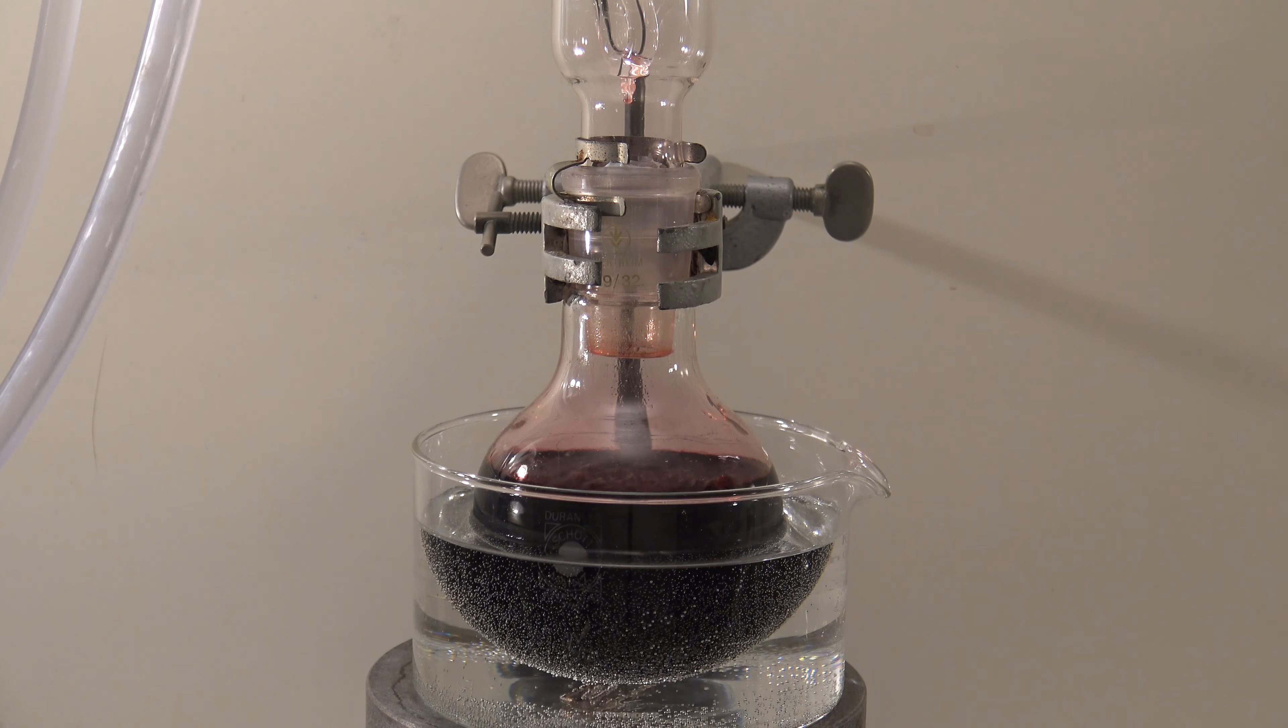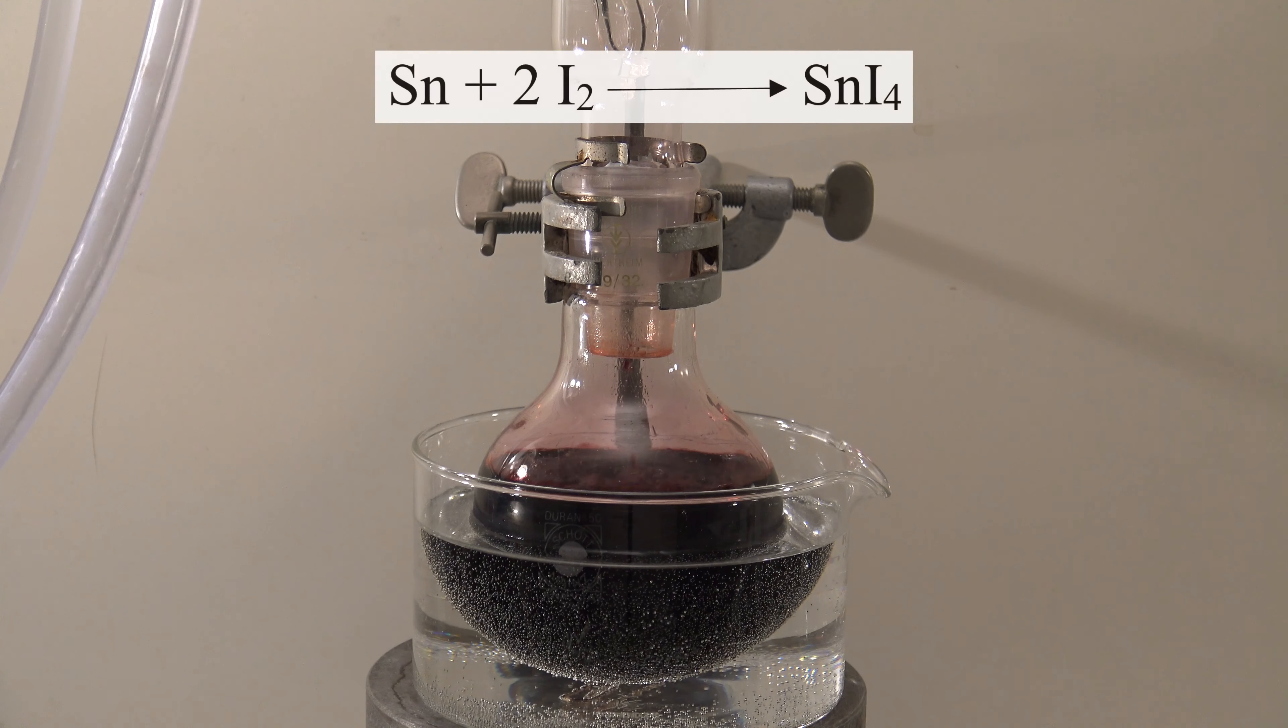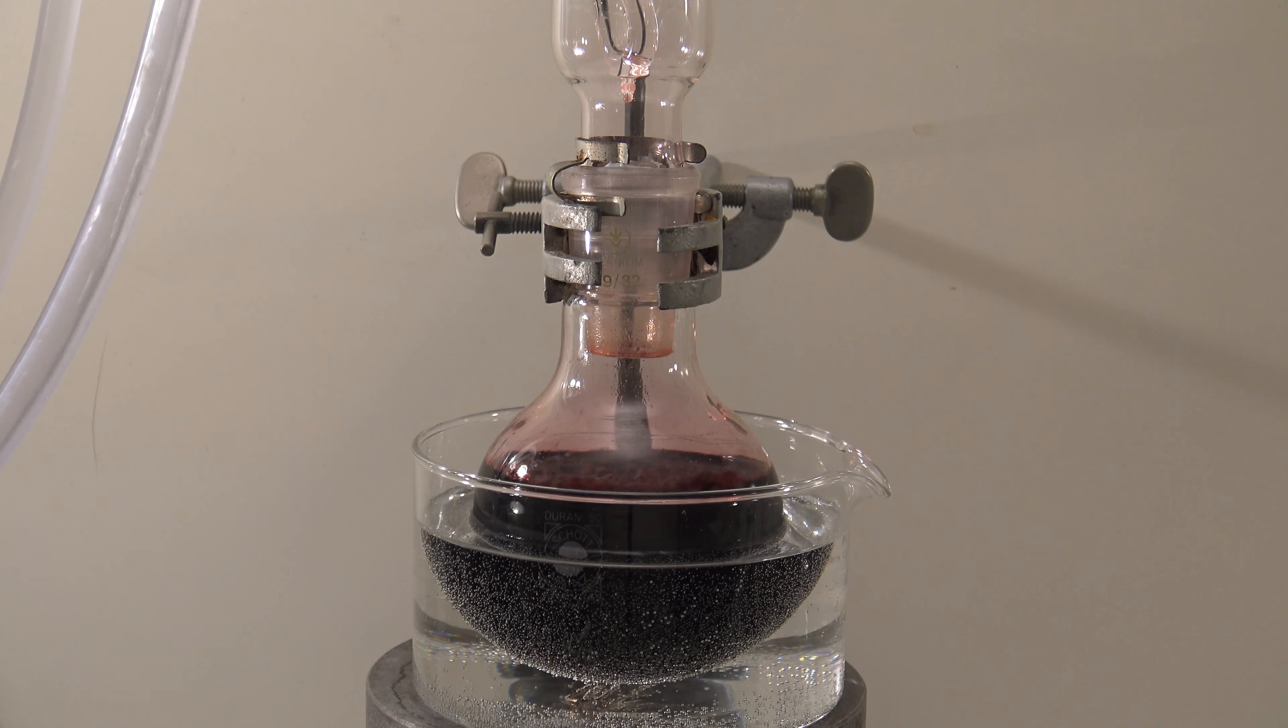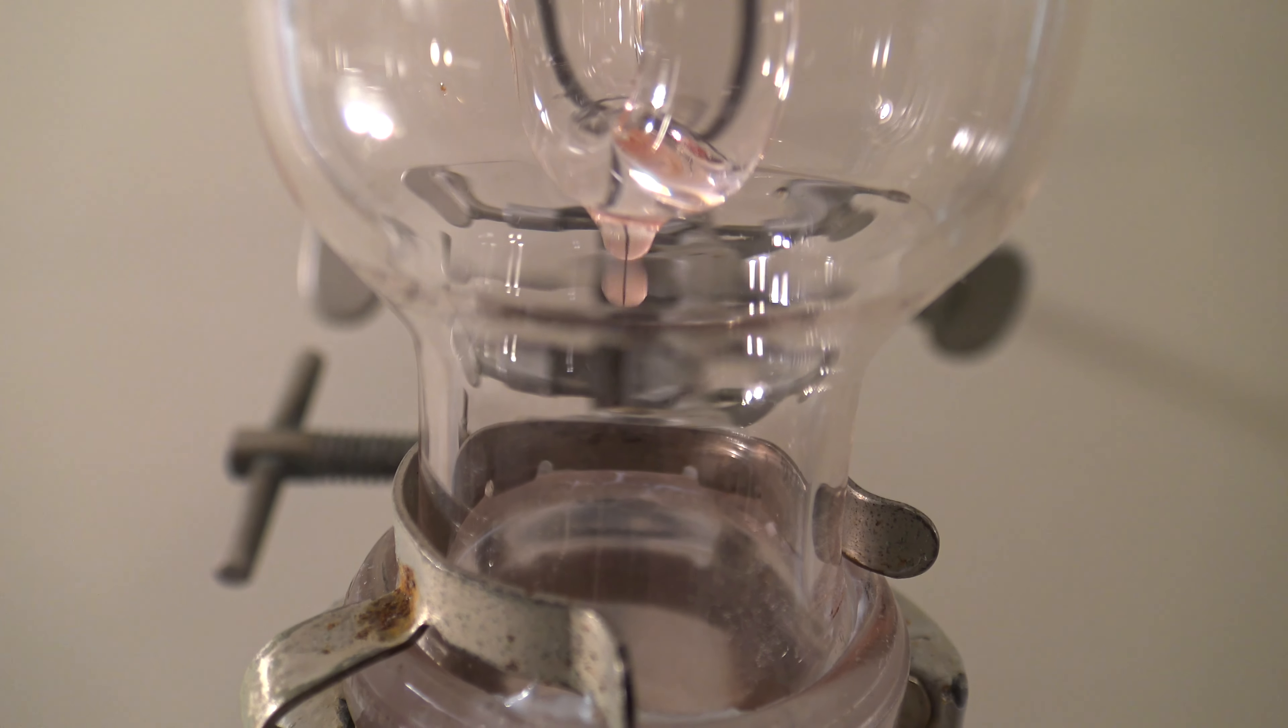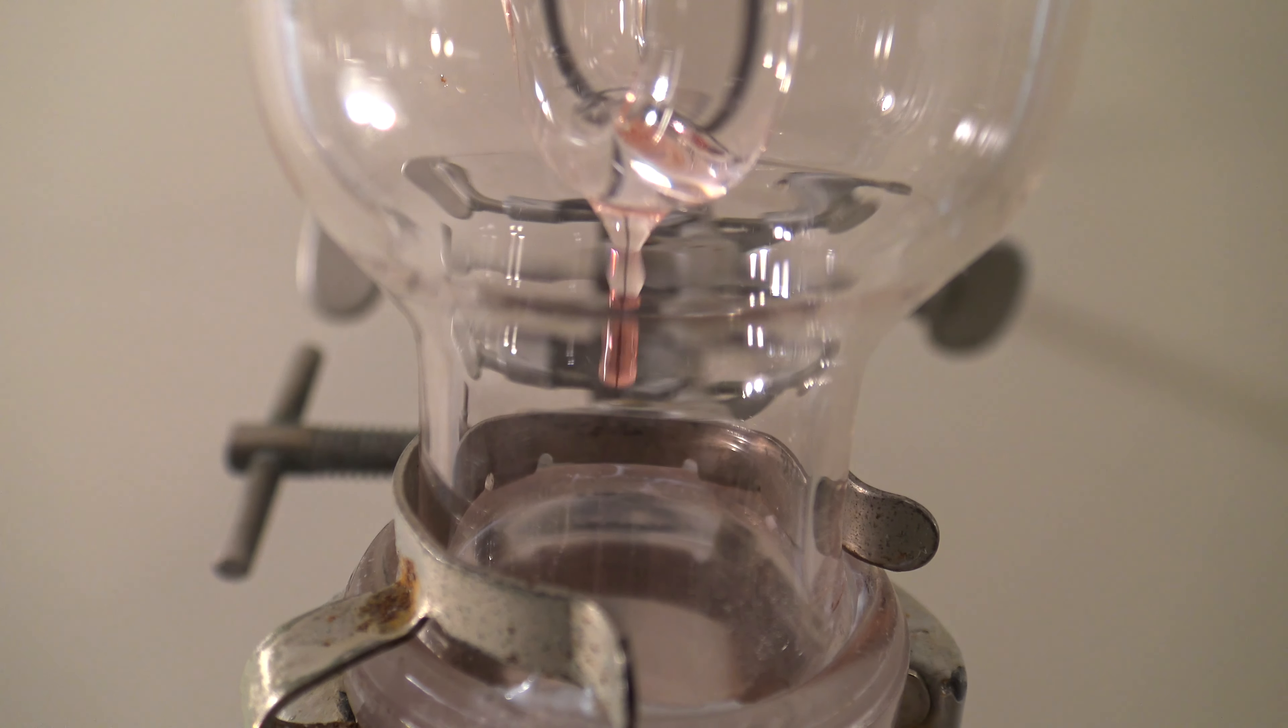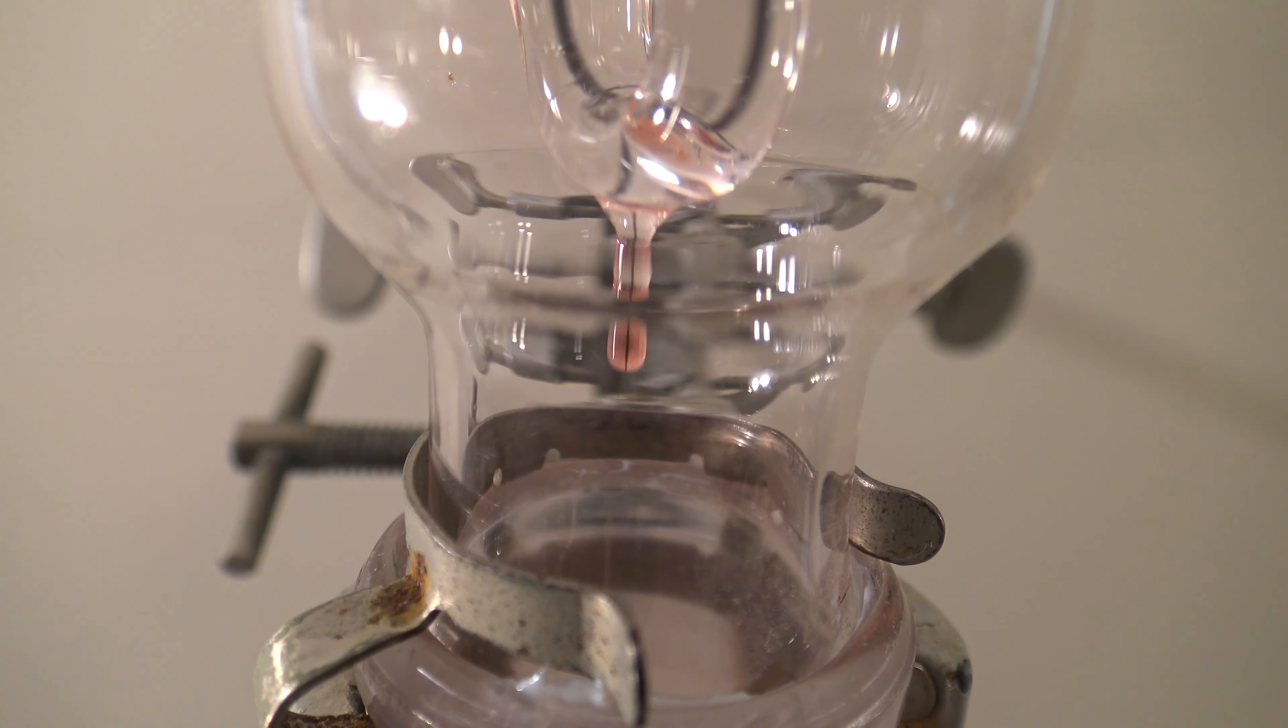The following simple reaction takes place: tin and iodine react to form tin(IV) iodide. The dichloromethane acts as a solvent for the iodine and the tin iodide. Nevertheless, other solvents like chloroform, ethyl acetate, or toluene could also be used. The reaction should be finished after about 40 minutes when no iodine is present in the cooler anymore.